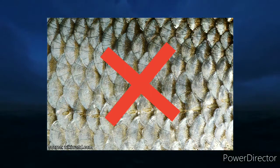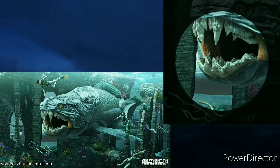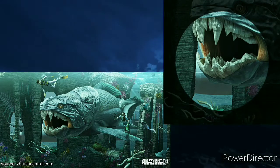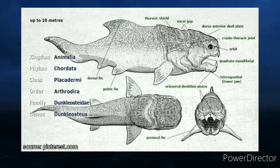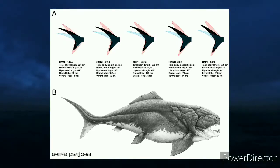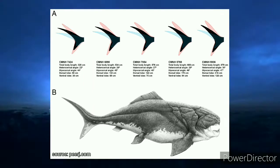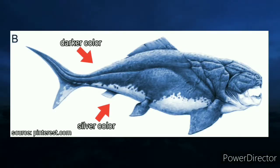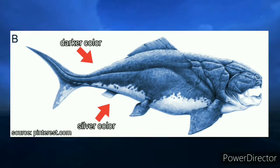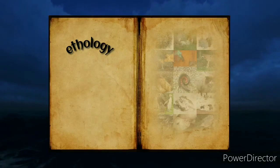Dunkleosteus didn't have teeth; instead it had very powerful bony blades. It had one dorsal fin, two pectoral fins, two pelvic fins, and one caudal fin divided into a dorsal lobe and a ventral lobe. Experts believe this giant fish had a dark color on the upper body and a silverish color on the belly.